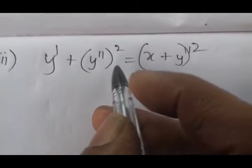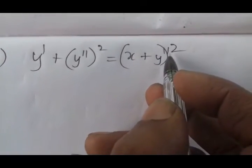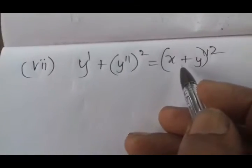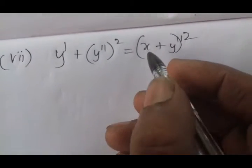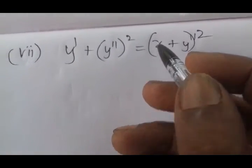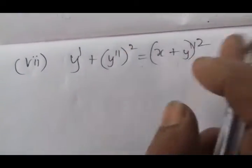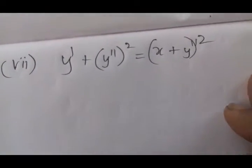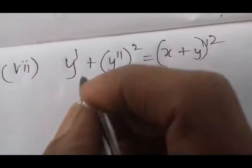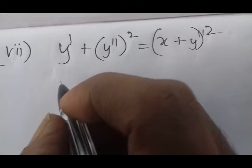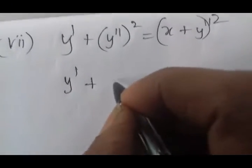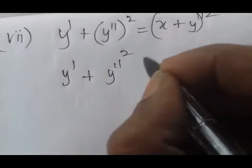There is y' and y''. The maximum is y'' — order 2. But the order is 2, the degree is the same — the power is the same. So if you do a complete simplification, we will solve it.